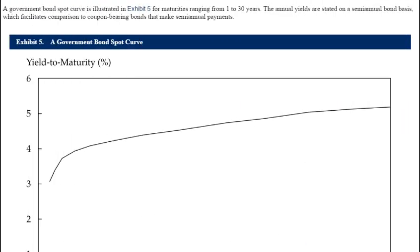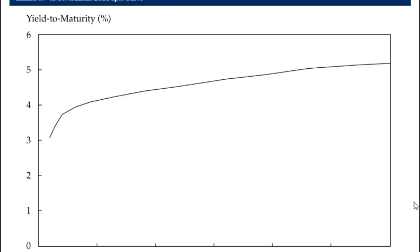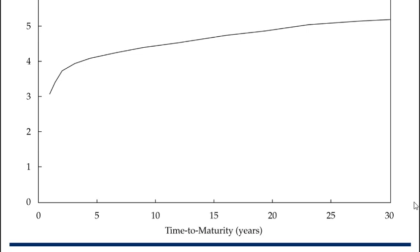A government bond spot curve is illustrated in Exhibit 5 for maturities ranging from 1 to 30 years. The annual yields are stated on a semi-annual bond basis, which facilitates comparison to coupon-bearing bonds that make semi-annual payments. Remember when we did our calculations with regards to the yield on zero coupons, we were assuming a semi-annual bond basis — so that reinforces that fact. Scrolling down, you can see the curve is upward sloping.